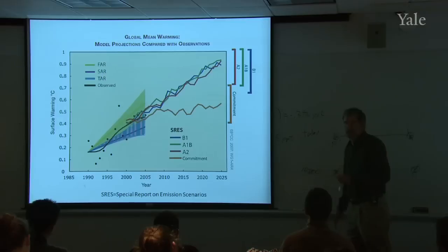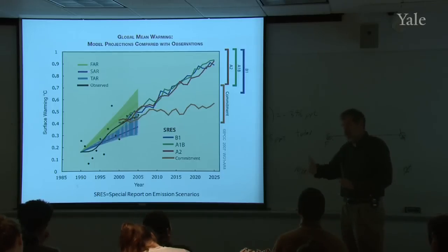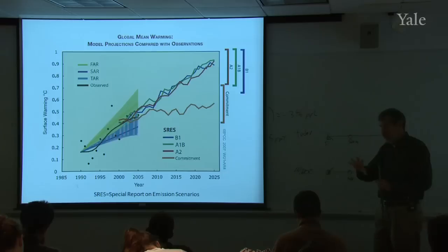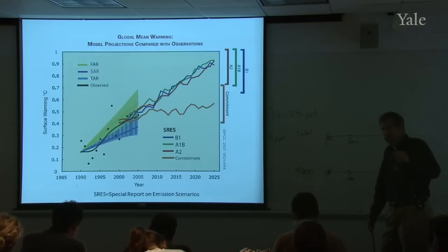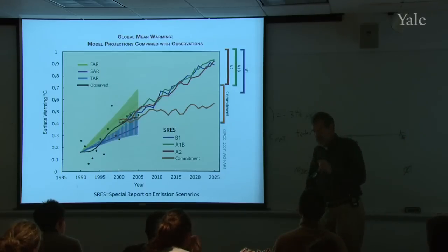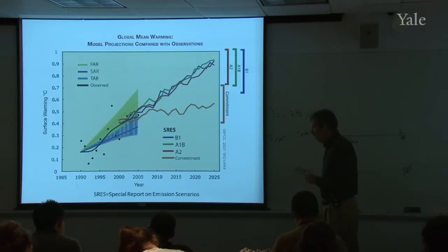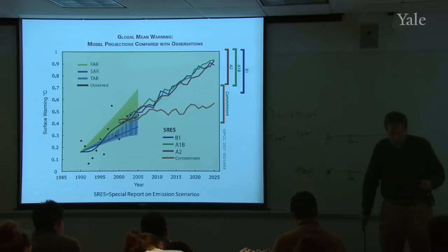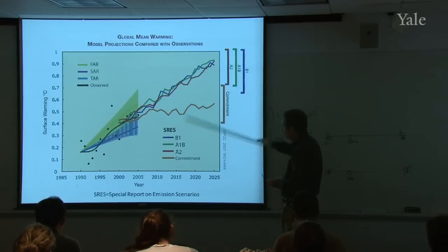This shows something called the commitment curve. That is a code for constant composition. That essentially says no further CO2 emissions starting in the year 2000. The temperature does continue to climb on that because even with constant CO2 emissions, you still have to warm up the oceans. The oceans are putting a lag on all of this because of their enormous heat capacity. This continued rise is due to mostly trying to warm up the oceans, even though the greenhouse effect is kind of fixed. Then these different scenarios follow each other pretty closely over this time frame.